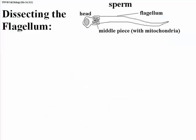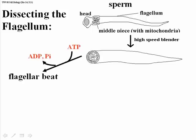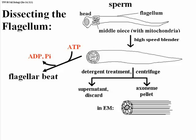You can dissect a cilium or flagellum and analyze the structures inside. Here we have a sperm, and we're going to concentrate on the flagellum, which you can pop off using a high-speed blender. You then have a membrane-bound 9+2 array of microtubules, and this isolated flagellum will actually beat just like a real flagellum if you add ATP — it is a model for the intact sperm tail movement. If you then treat with detergents that disrupt the phospholipids of the membrane, you can strip the membrane off, and centrifuge to collect the axoneme, throwing away the supernatant with all the phospholipids and other membrane components.